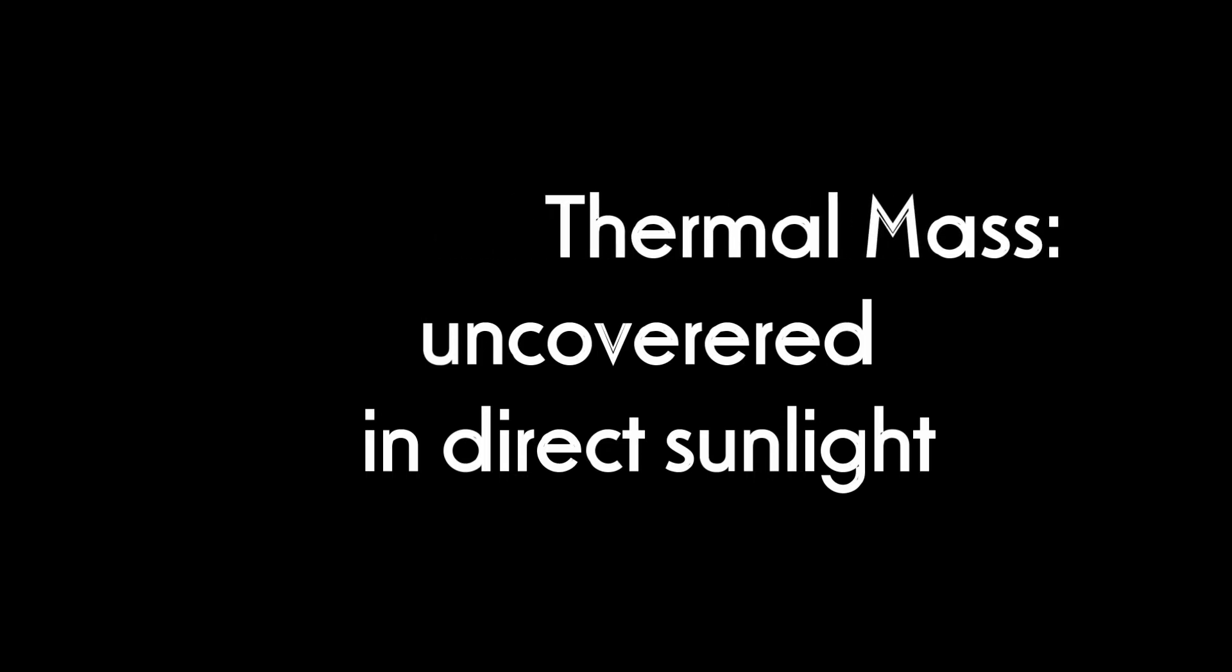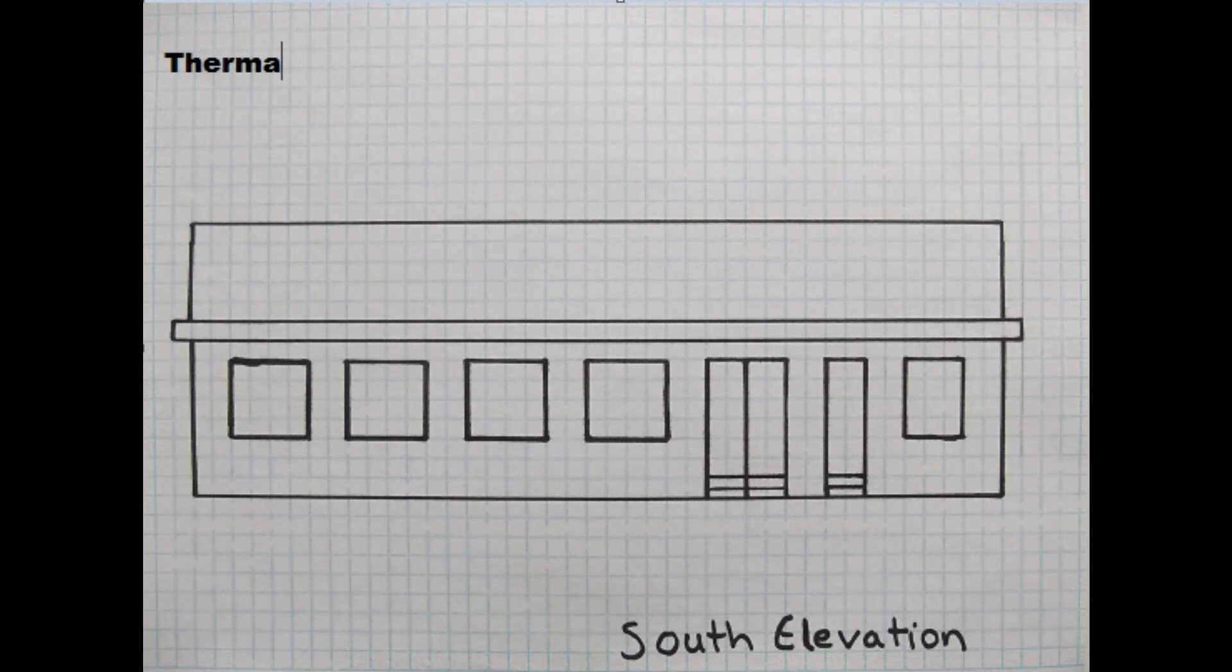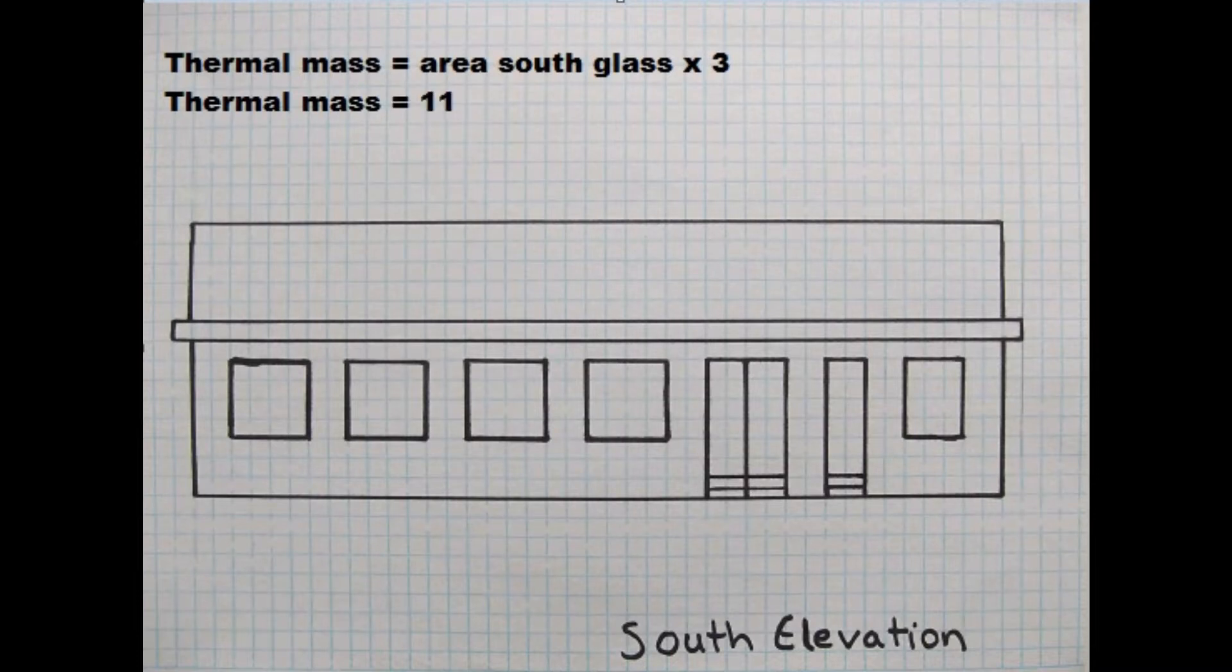Thermal mass works best when it is uncovered and receives direct sunlight. While the design is entirely up to you, some people use rock walls, some people use water tubes, and others simply rely on stone flooring.